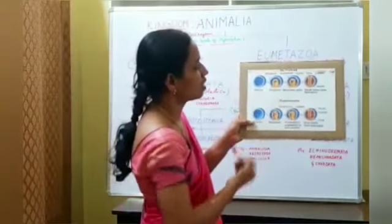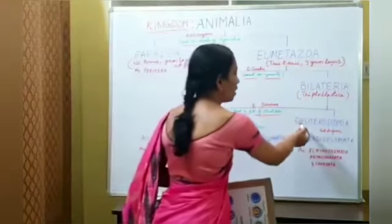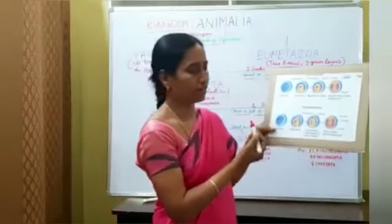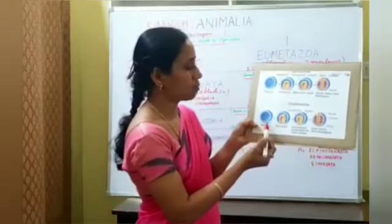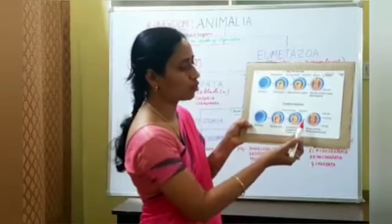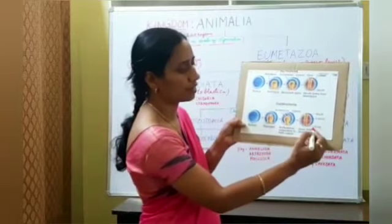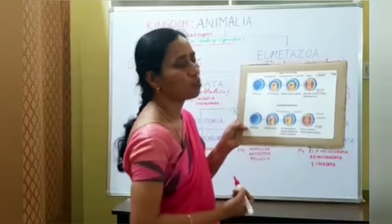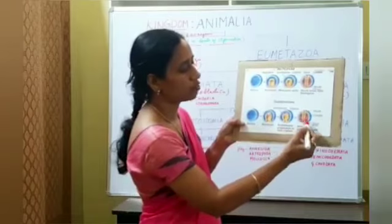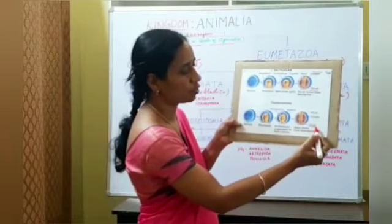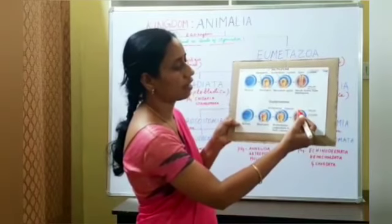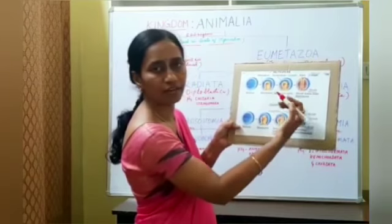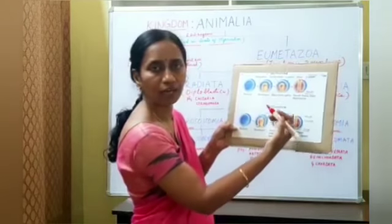Next is Deuterostomia. In these organisms, the blastopore develops into the anus. The secondary opening, the mouth, will develop on the opposite side of the archenteron later on.